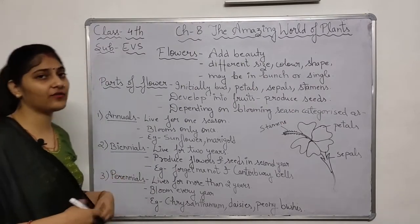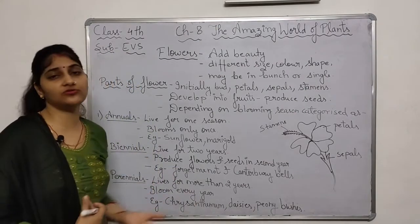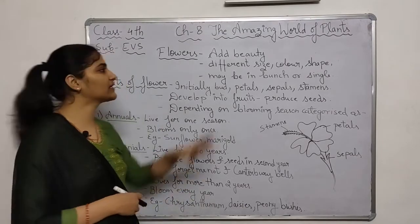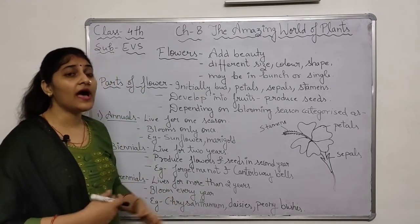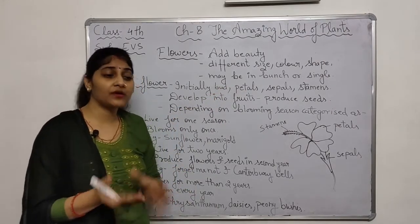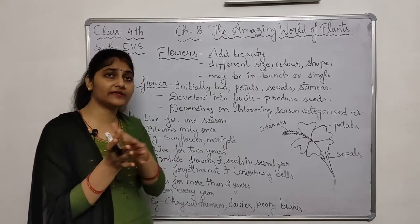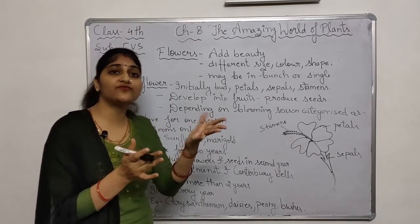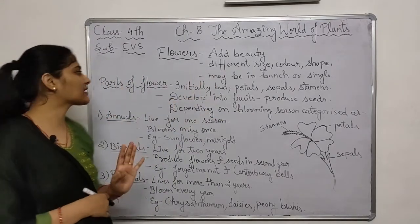Now let us understand about flowers. Flowers are the part of the plant which add beauty to the plant. Flowers are of different sizes, different shapes, and different colors. They are also found either in a bunch or singly. Some flowers come in a bunch and some come alone. Like orchids — they come together with many flowers. So flowers can be in a bunch or single.